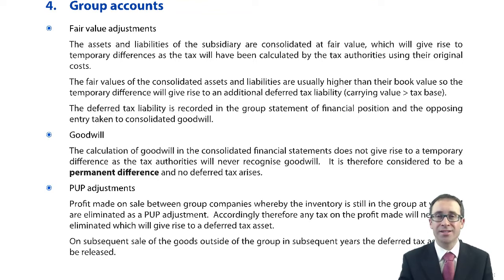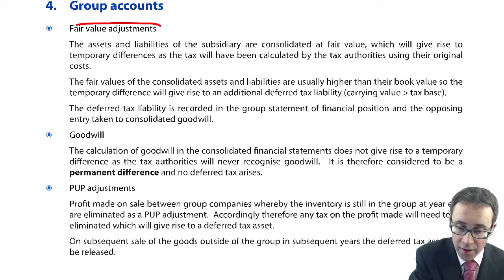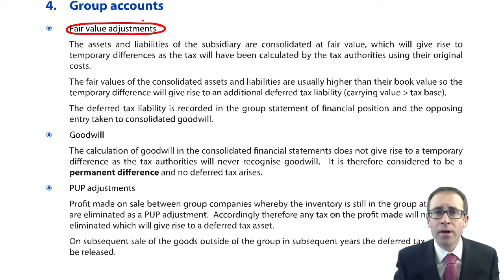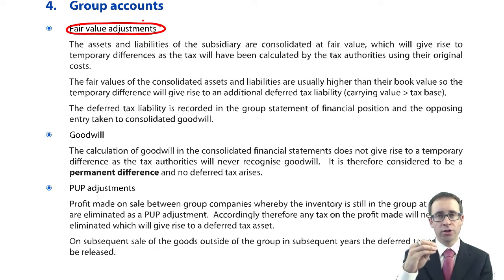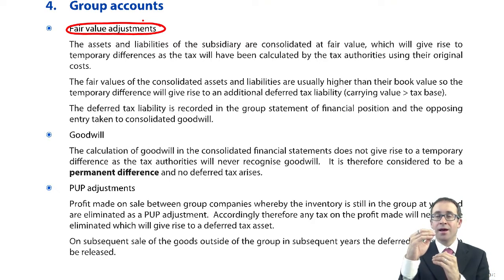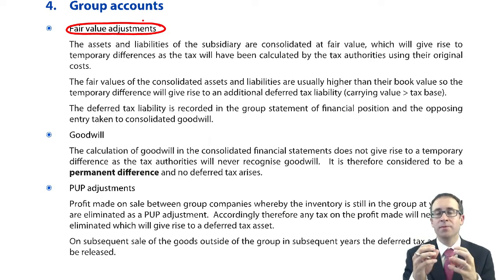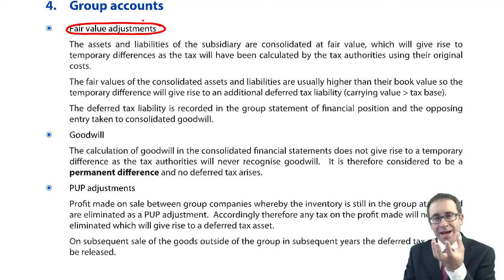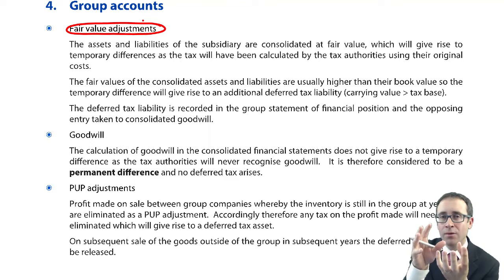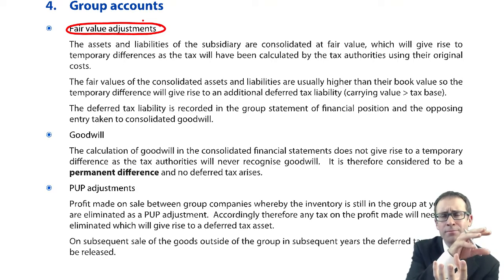So what we've got are three areas to consider. One of which we don't need to consider whatsoever, which is the middle one — goodwill. But we'll talk about that when we get to it. The first one we're going to look at is fair value adjustments. Remember, when we consolidated our subsidiary, we went through and adjusted the carrying values — the book values — up to fair value. That gives us a little bit of an issue from the deferred tax perspective, because the fair value is not reflected in the individual accounts of the subsidiary.